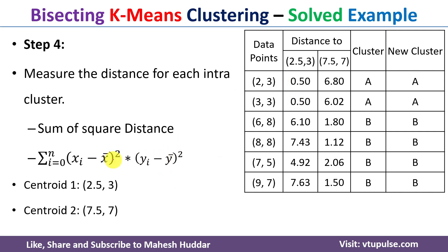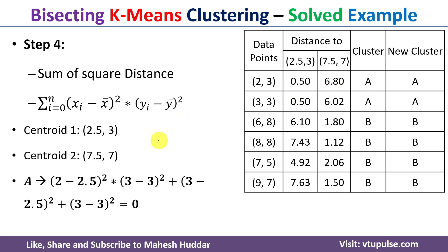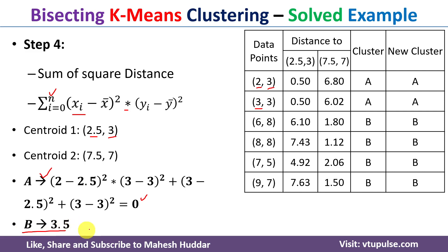For cluster A: x̄ = (2+3)/2 = 2.5, ȳ = (3+3)/2 = 3. Applying the formula: [(2−2.5)² + (3−3)²] + [(3−2.5)² + (3−3)²] = 0.25 + 0.25 = 0.5, which simplifies to 0. So the sum of squared distances for A is 0. Similarly, the sum of squared distances for cluster B is 3.5.